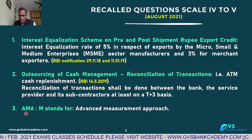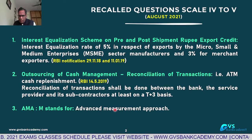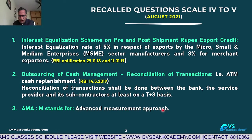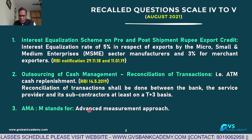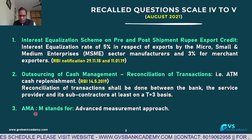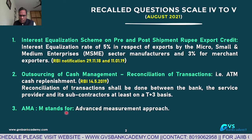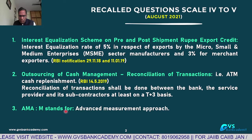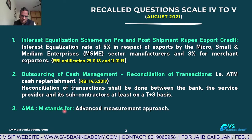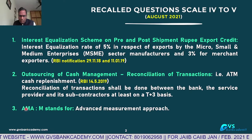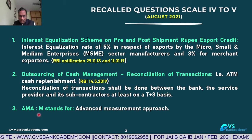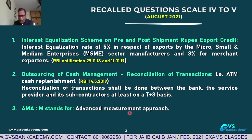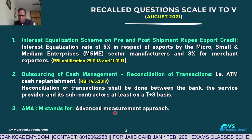Q3: In AMA, M stands for Measurement — Advanced Measurement Approach. This is one of the operational risk management methods. For calculation of operational risk, we use three methods: one is Basic Indicator Approach, second is Standardized Approach, and third is Advanced Measurement Approach. This is one of the methods of operational risk management in banks.